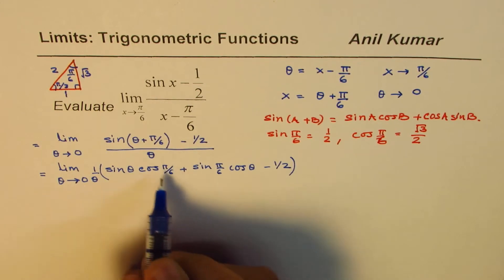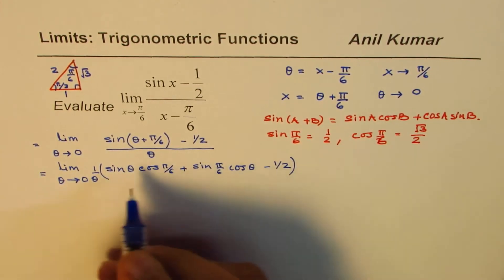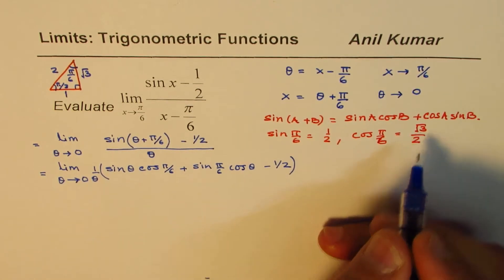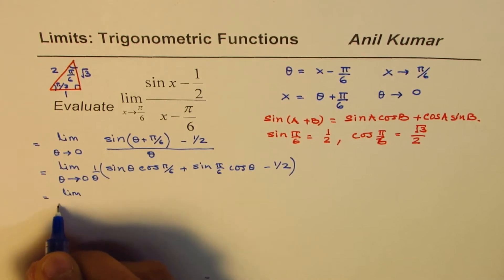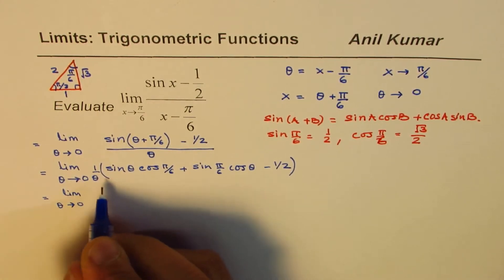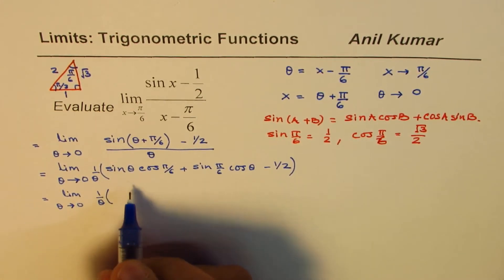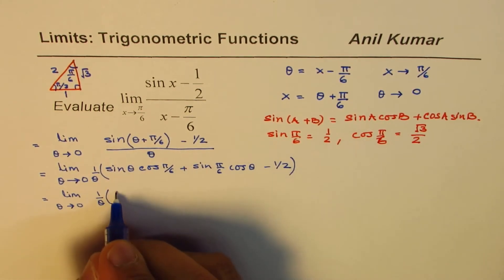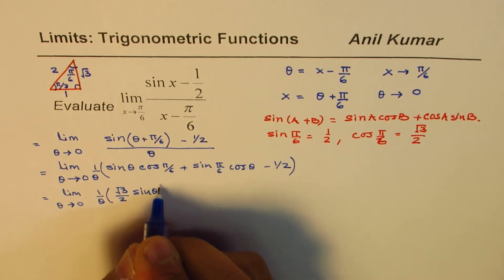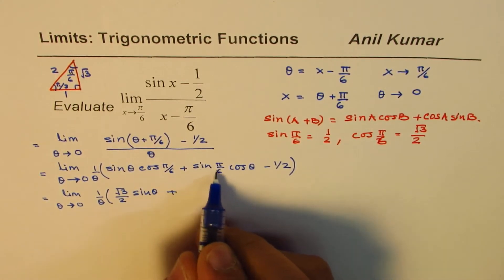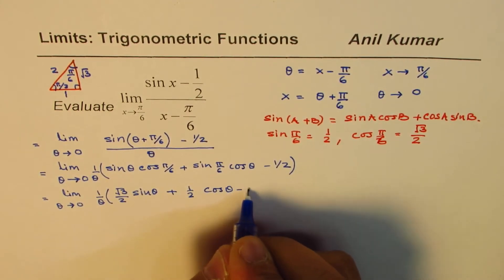Substituting the values — cos(π/6) = √3/2 and sin(π/6) = 1/2 — the expression becomes: limit as θ → 0 of (1/θ) · [(√3/2) sin θ + (1/2) cos θ - 1/2].